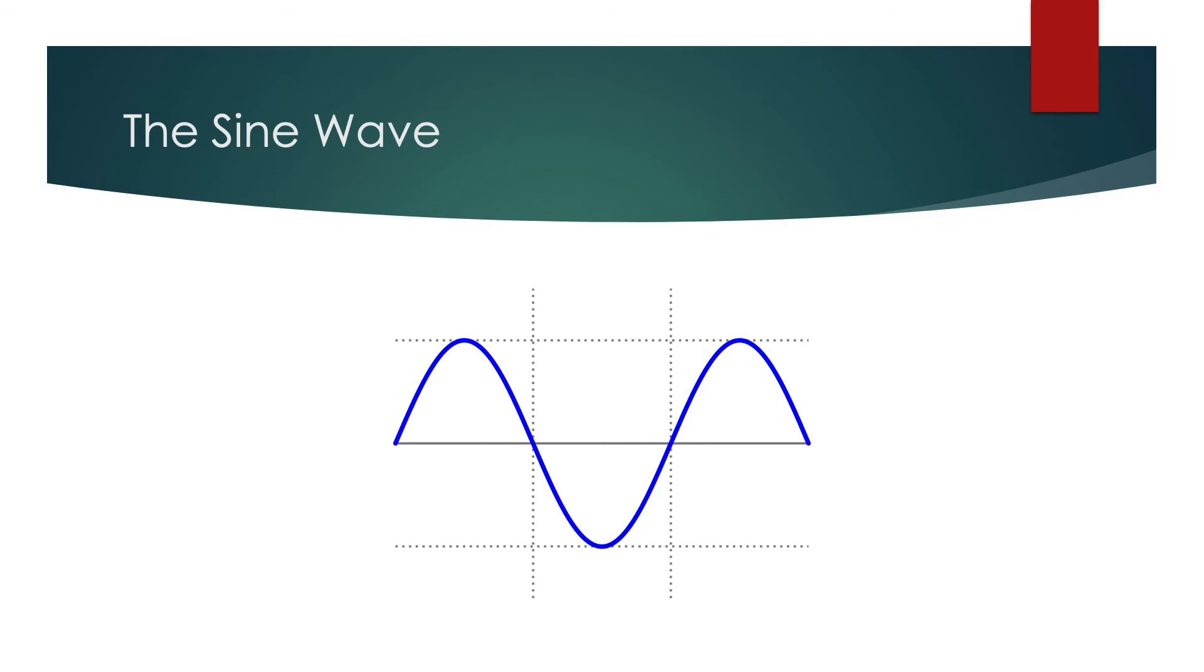So a tighter string vibrates faster. It's under a higher tension. A looser string will vibrate more slowly. And those are the factors that create pitch differences across a guitar, where all the strings are the same length, but they're different thicknesses, different densities or mass, and they are at different tensions.